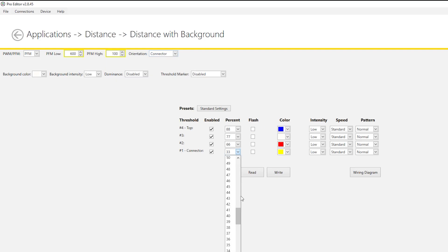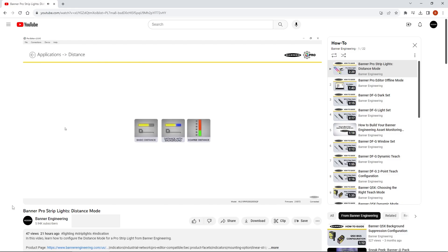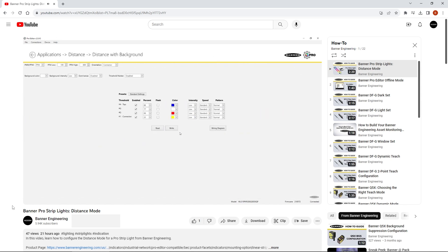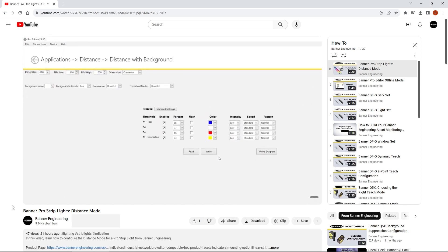To begin, configure the light for a Pulse Pro compatible animation mode using the free Pro Editor software. If you need assistance with this step, check out our Pro strip light distance mode video for a PFM programming example.